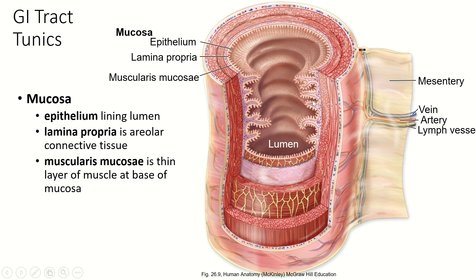Starting on the lumen side, facing the lumen is the mucosa. This is an epithelium — of course it is, because it's facing the lumen. What always faces a lumen? The epithelium. It also includes a lamina propria, which is just a layer of areolar connective tissue underneath it. And then there's a really thin layer called the muscularis mucosa.